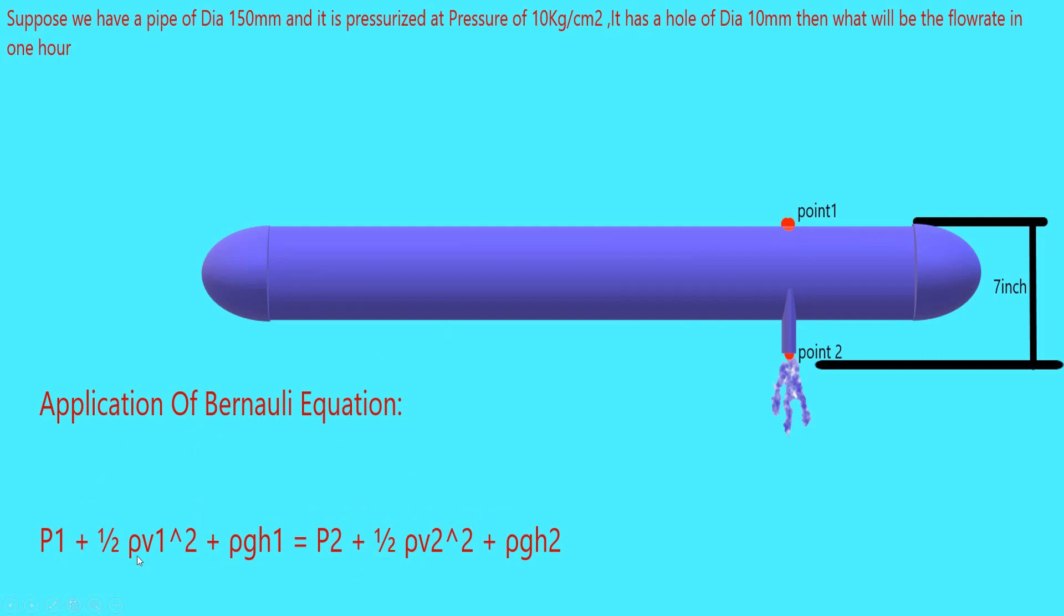Now, Bernoulli equation as we already know. How will we implement it? Before implementation of Bernoulli equation, few parameters we need to decide. For example, when water will discharge from point two, then the velocity at point two will be much higher as compared to the velocity at point one, because the water moves from point one to point two very slowly because the complete pipeline is pressurized. So at point one you can consider that the velocity will be zero, can be neglected. The velocity is very much smaller than point two, so the velocity of point one can be neglected.